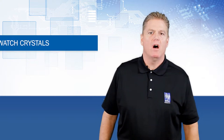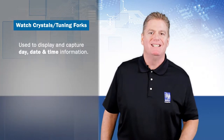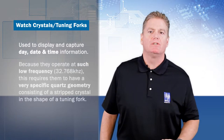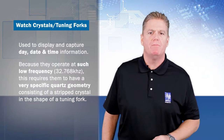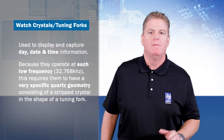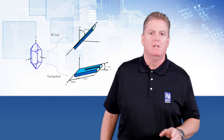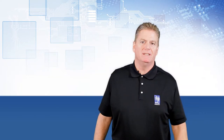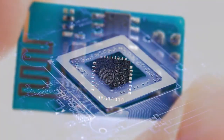First in the picking order are watch crystals. Watch crystals, also known as tuning forks, are used to display and capture day, date, and time information within electronic devices. Because these crystals operate at such a low frequency of 32.768 kHz, this requires them to have a very specific quartz geometry, consisting of a stripped crystal in the shape of a tuning fork. That frequency is then divided by two 15 times to give us a 1 Hz or 1 second interval. They can offer stabilities as low as 10 parts per million. Watch crystals are also used in many places, such as wearables, wireless modules, microcontrollers, and low power processors.